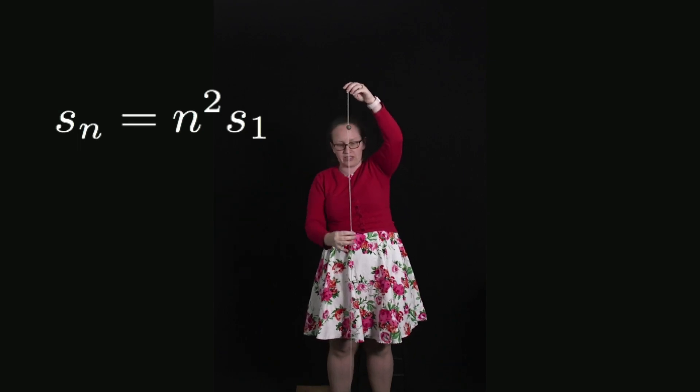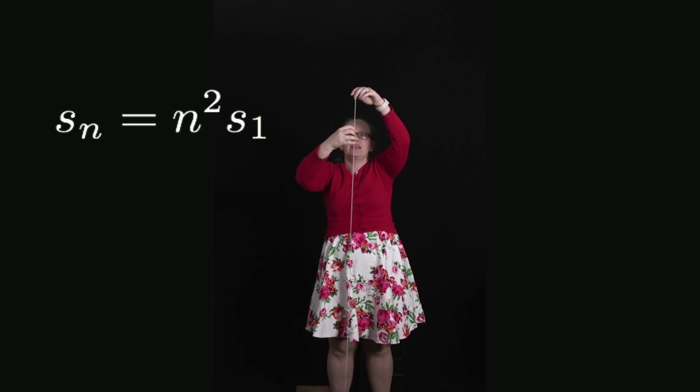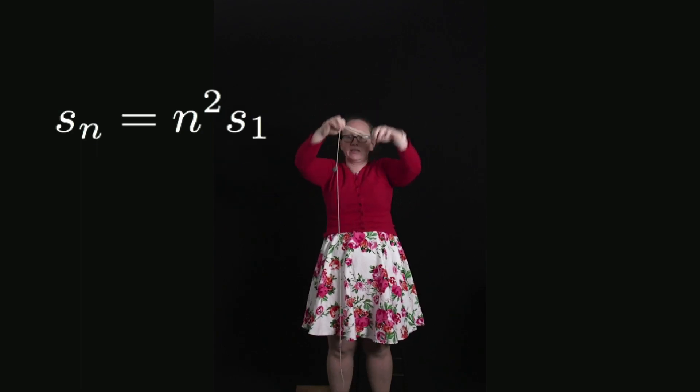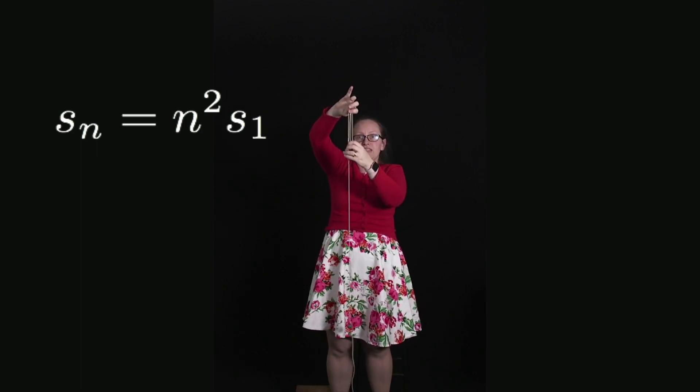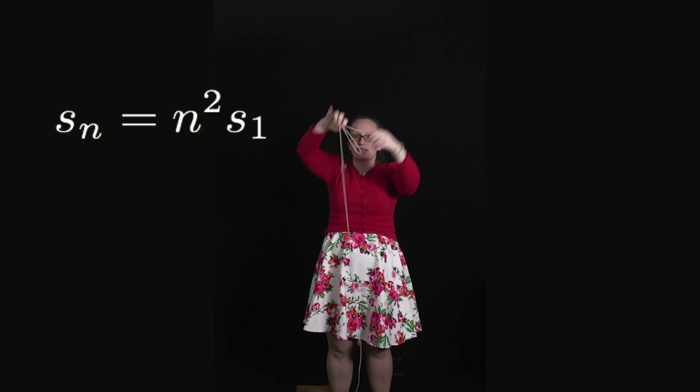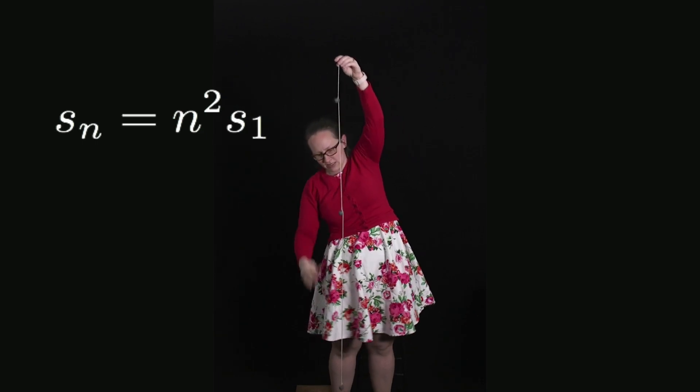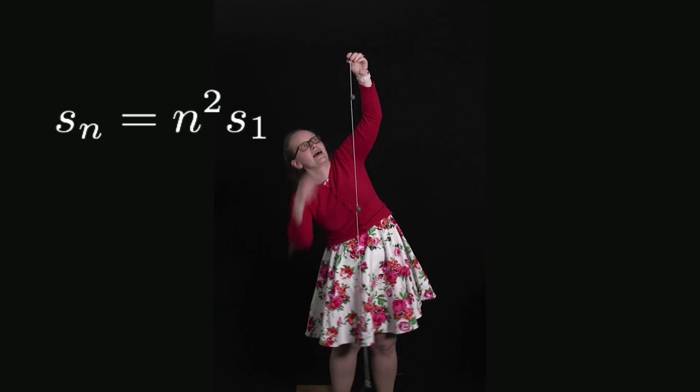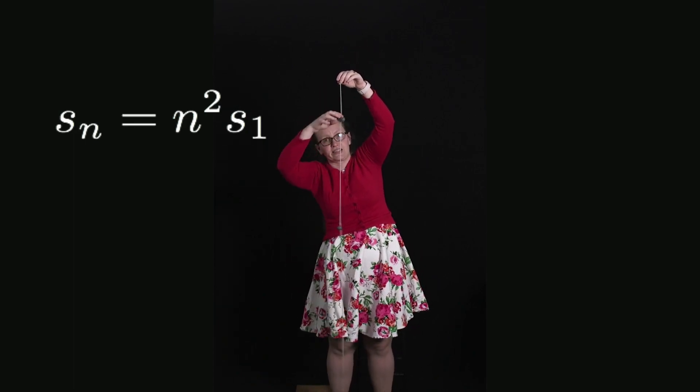The distance to the second mass here is four times, that's four times the distance to the first mass. The distance to the third mass, which is this distance here, is nine times this first distance.